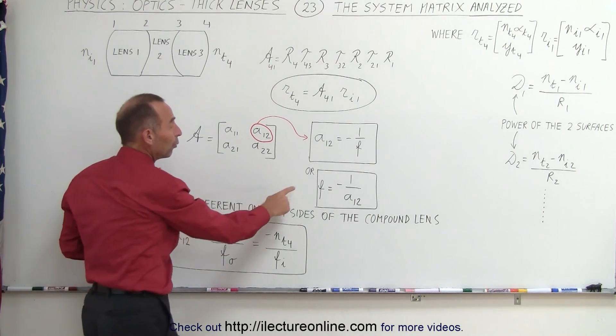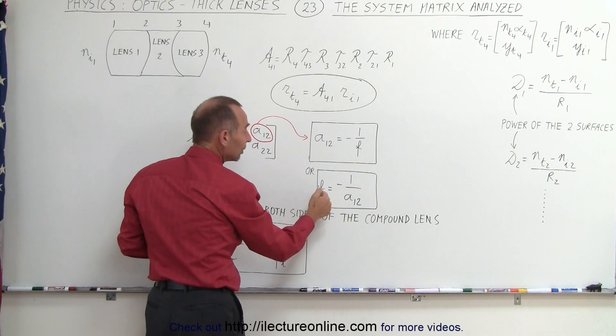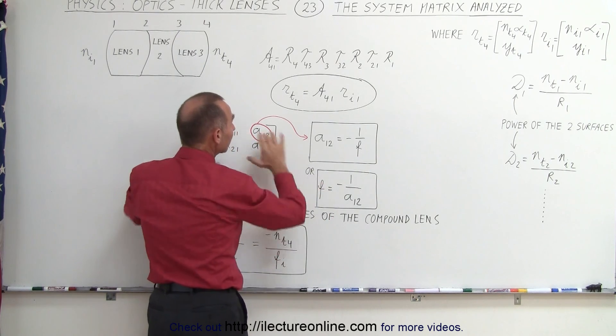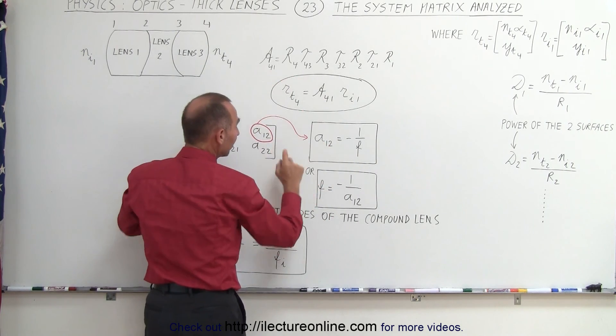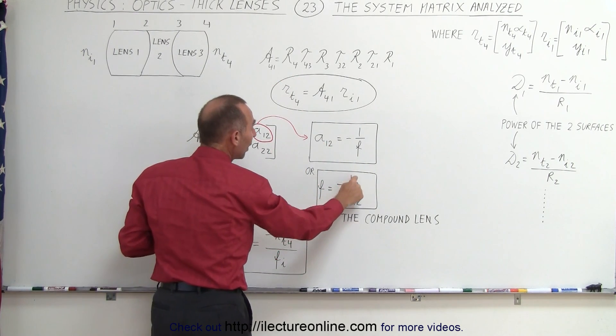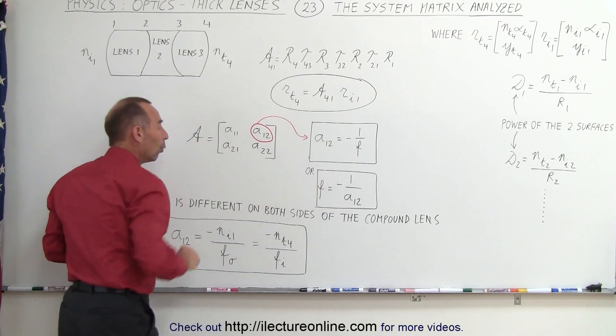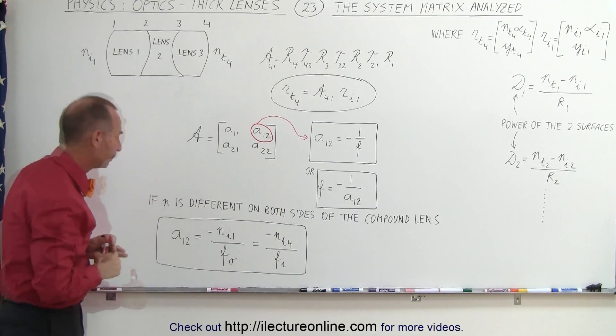Therefore, we can say that the effective focal length of the compound lens system is equal to minus 1 over the element A12.